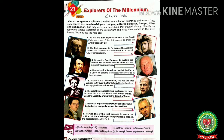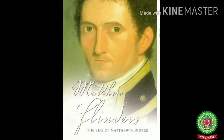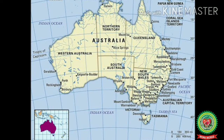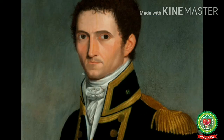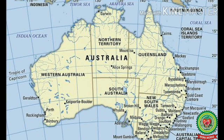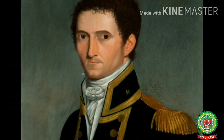Now let us discuss the other prominent explorer: Matthew Flinders. Matthew Flinders was born on March 16, 1774. He was an English explorer who sailed around Australia and mapped much of its coastline. He was an English navigator and cartographer who led the first inshore circumnavigation of the landmass now known as Australia. He was involved in several voyages of discovery between 1791 and 1809.